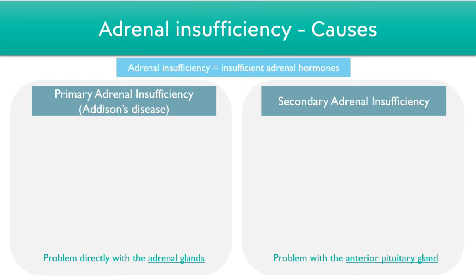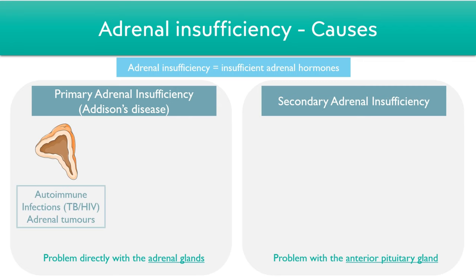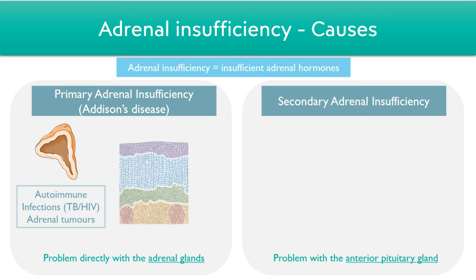Starting with primary causes, there can be autoimmune conditions, infections such as tuberculosis or HIV, or adrenal tumors. To illustrate how this process works, we have the layers of the adrenal gland here. There can be autoimmune complexes or infections which basically damage the layers of the adrenal glands, resulting in destruction over time. Note that the topmost layers are affected first, so there are reduced levels of aldosterone and cortisol in the blood as a result.